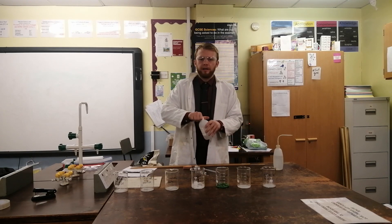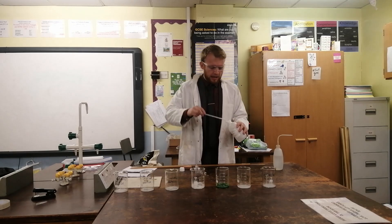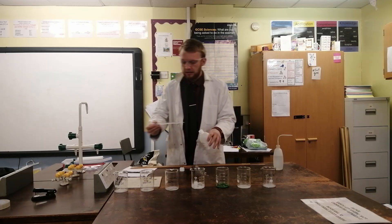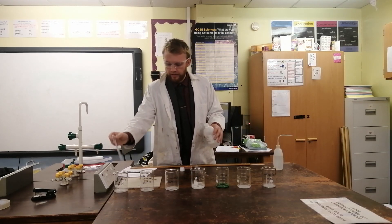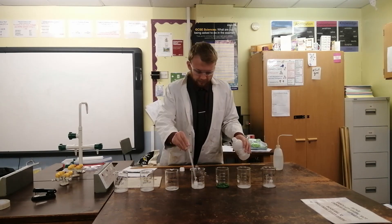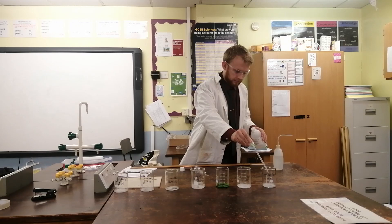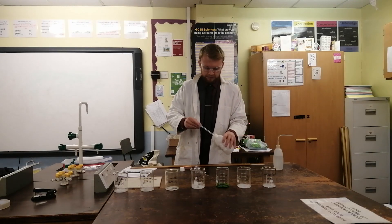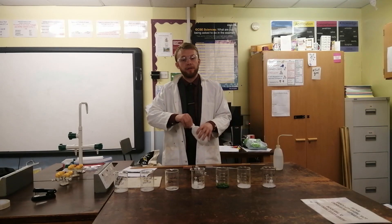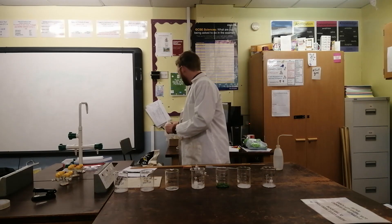I need to take my ethanol — bearing in mind that it is flammable, highly flammable — and I'm going to place about 5 millilitres into each of my different metal ions here. Then I need to make sure that the rest of the ethanol is well away from the experiment.